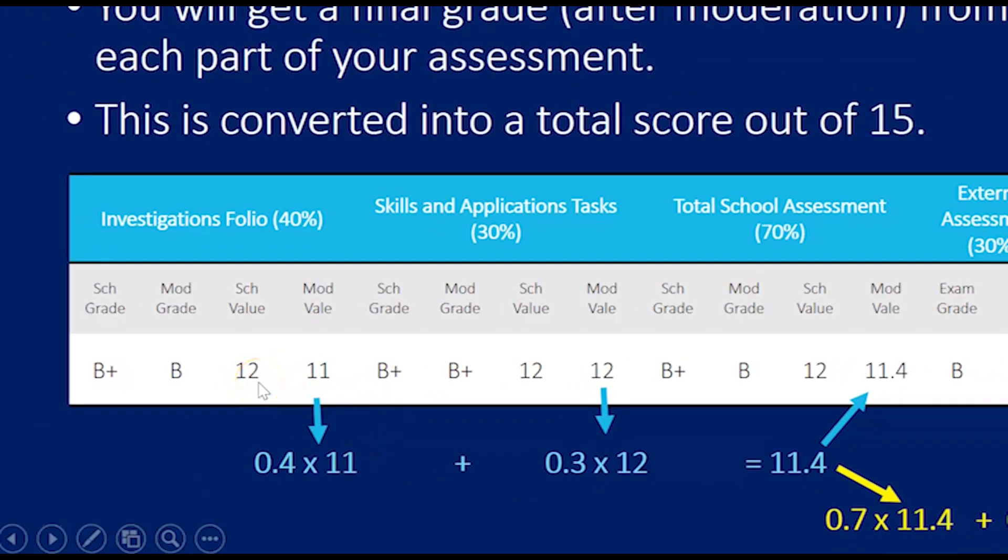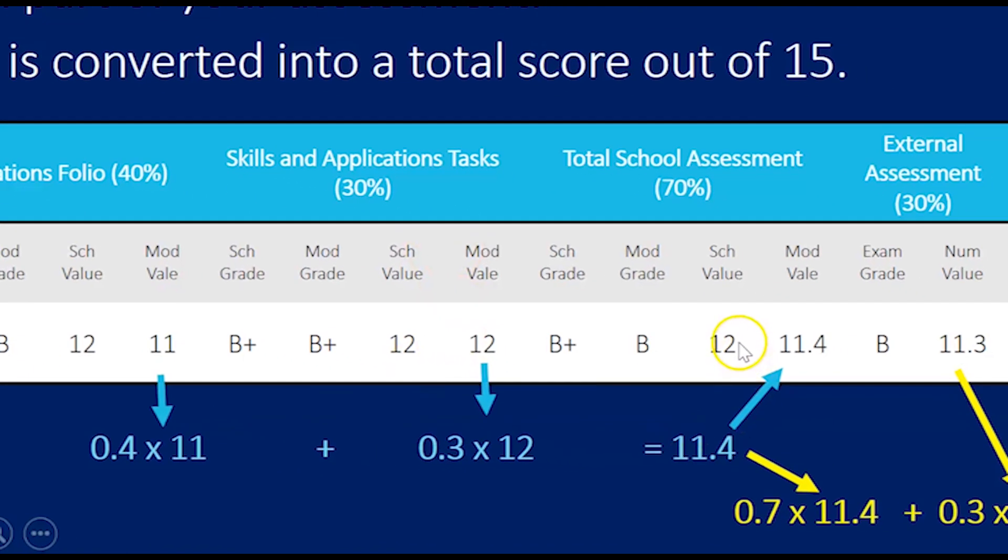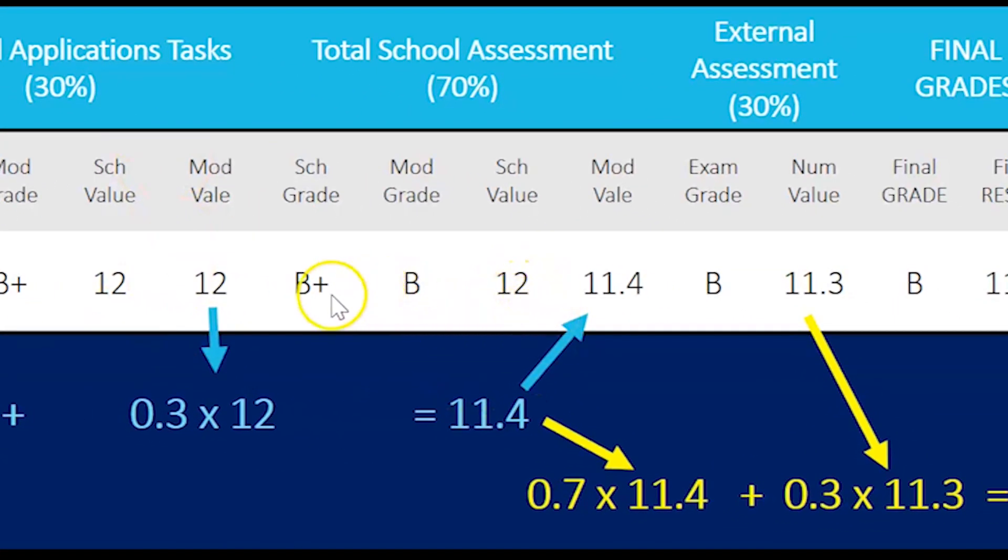So these are the grades you've got for all your school work. Those are given a value out of 15. So 11 and 12, they're the values that you get after moderation. Now it's 40% and 30% for skills and applications, so overall you get a value of B for your school assessment which has a grade of 11.4. That's the average of your school-assessed work.